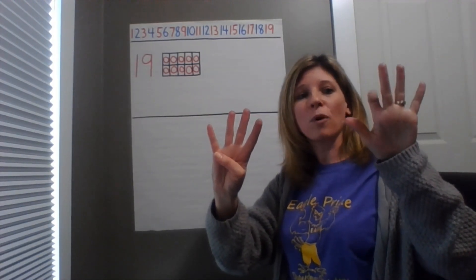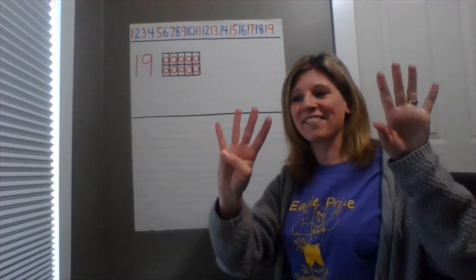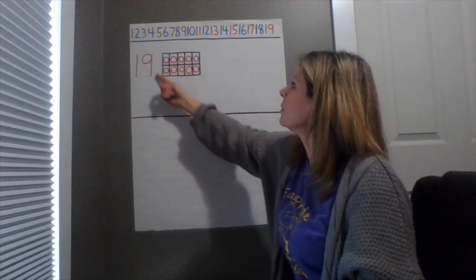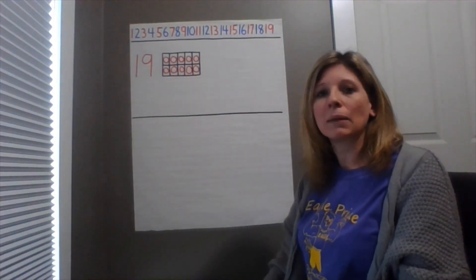One, two, three, four, five, six, seven, eight, nine. So I know that 19 is a group of 10 and nine more.